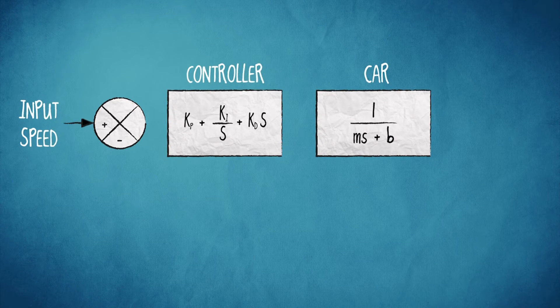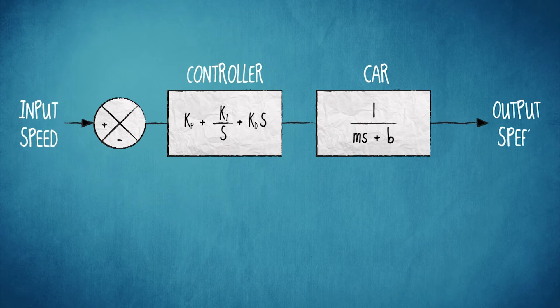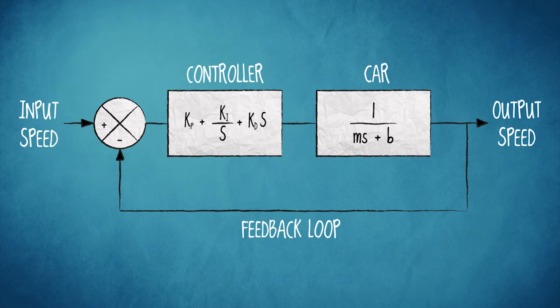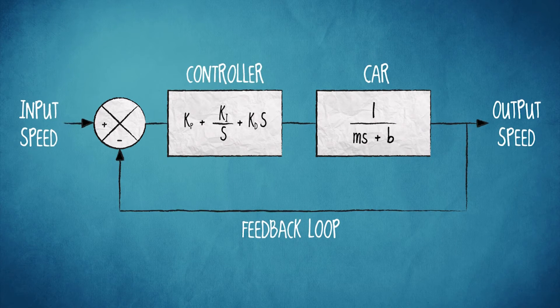And this is what that system looks like. The controller and the car work together to manage the cruising speed. This information feeds back through the system to measure the error between the output and the input.